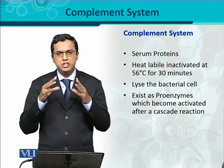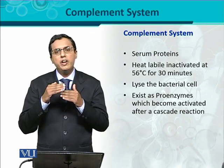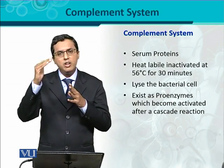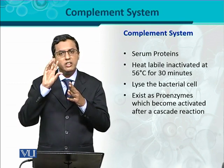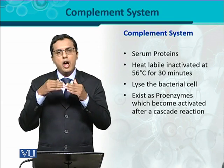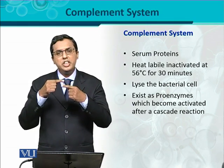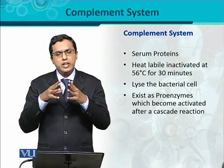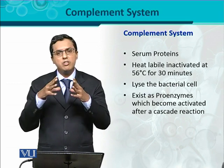When an infectious state occurs, these proteins get activated through a process called a cascading reaction. For example, if there are 20 complement proteins from C1 to C20, when C1 gets activated by bacteria or an infectious agent, its residues will activate the next complement protein, C2 or C3. This is a chain reaction, also called a cascade reaction. If any protein is missing in this cascade, the process will stop at that point.